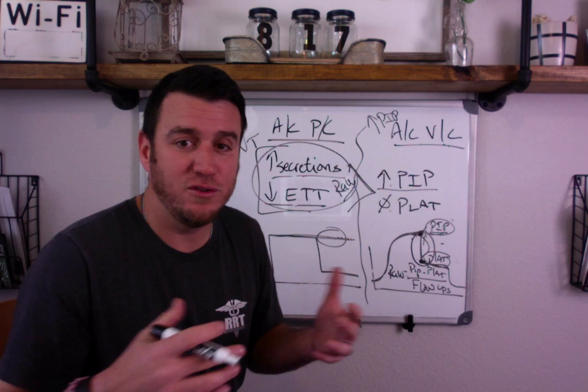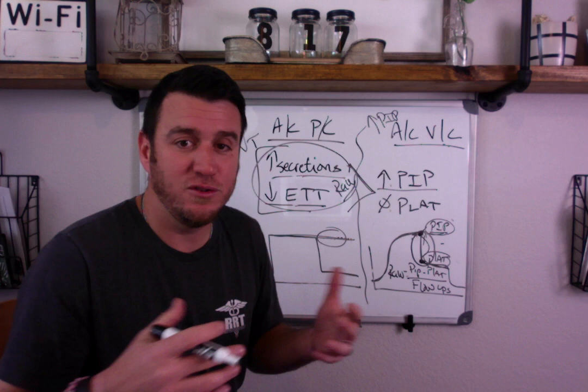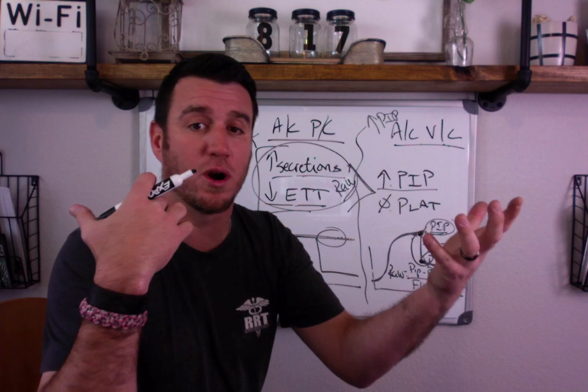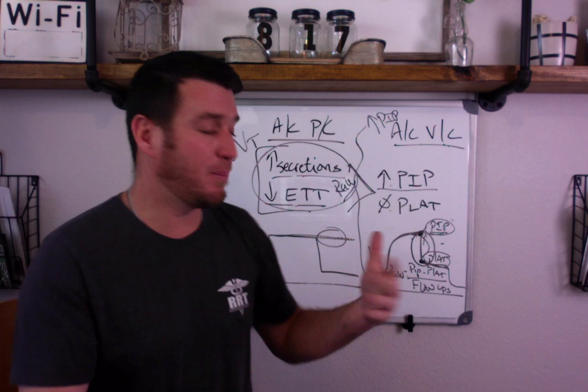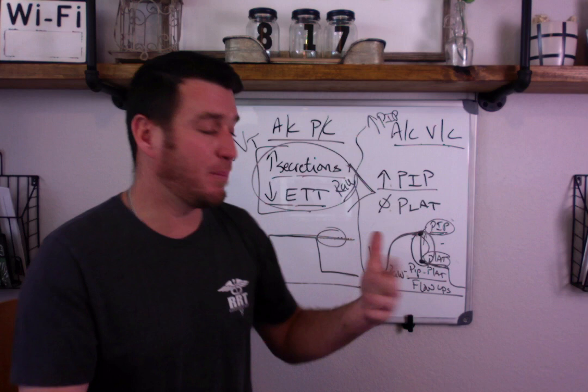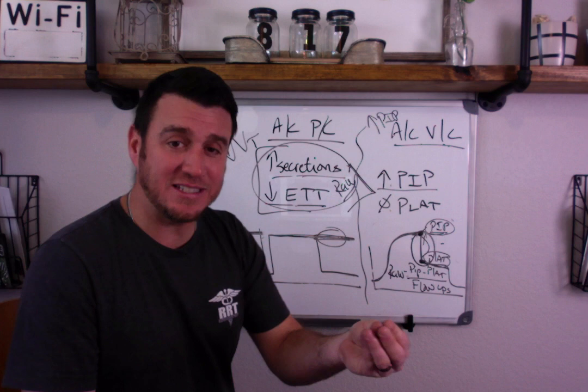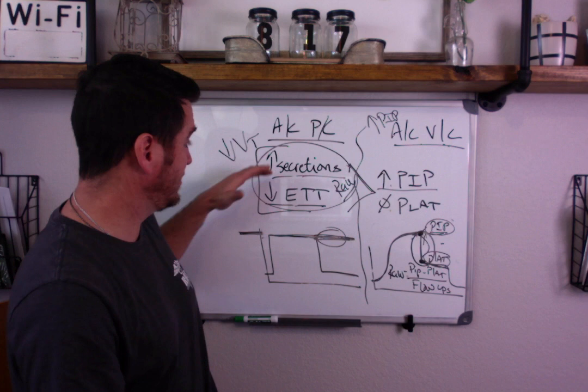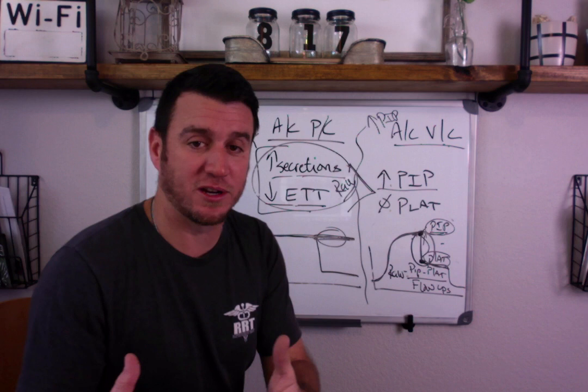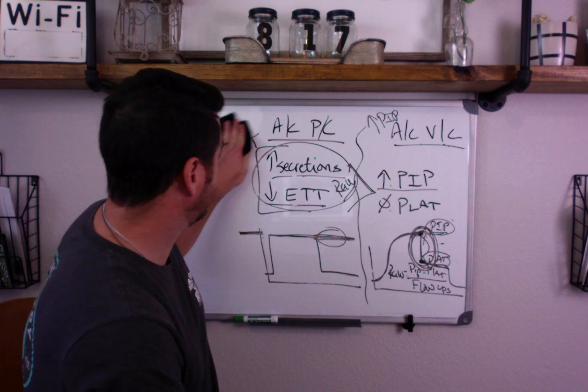The answer to your question is: in pressure control, other than your tidal volume, you really have no way to differentiate between an airway resistance problem or a static compliance problem. You have no way to differentiate because the pressure is held. In volume control, you can easily differentiate between an airway resistance problem — such as increased secretions or small endotracheal tube size — versus an alveolar compliance problem by assessing the drop between PIP and plateau.